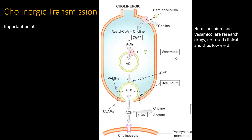We're going to look at the neurotransmitter aspects of autonomic pharmacology, and we'll start with cholinergic transmission. We're going to outline the process of getting acetylcholine to the nerve terminal.